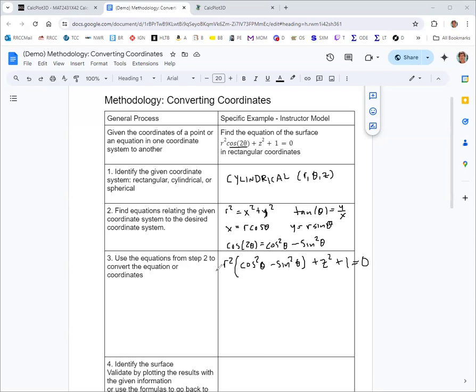And then we will distribute the r squared. And using these formulas, we see that that's x squared and y squared.